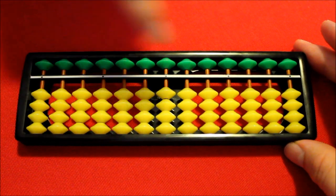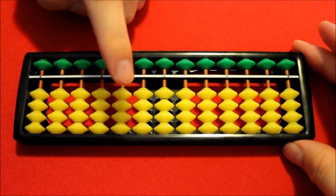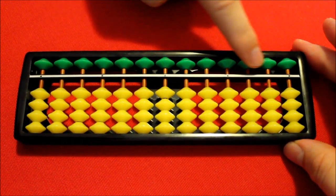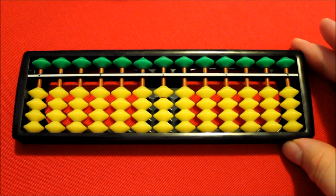Let me show you how it's used. To begin with, these yellow beads here are called the earthly beads and they are worth one each. These green beads here above the bar are called the heavenly beads and they're worth five each.